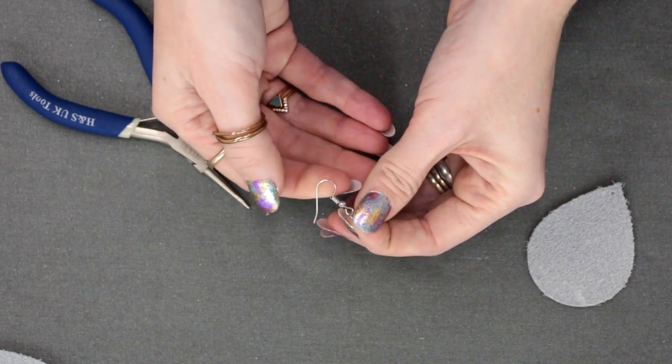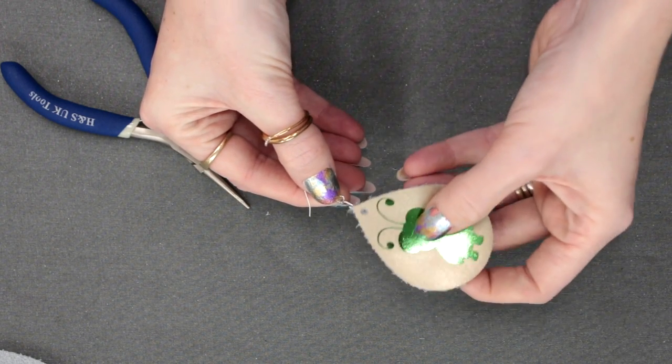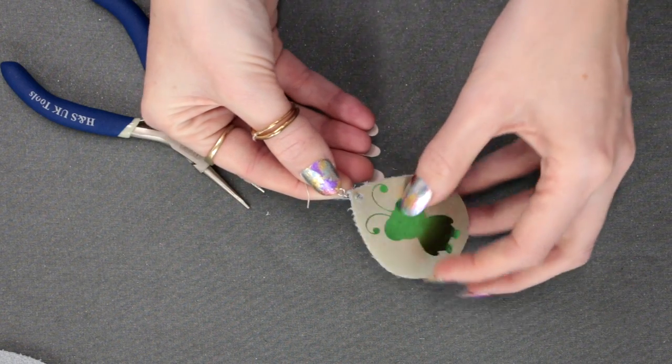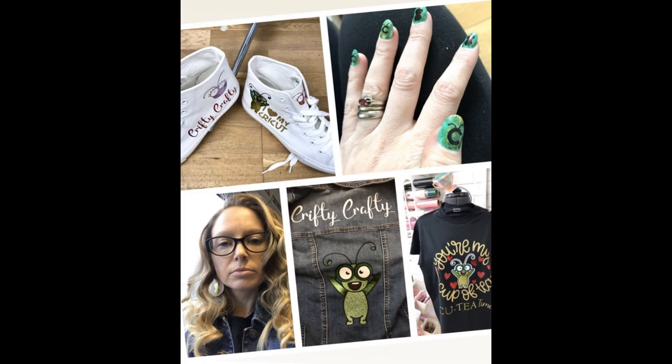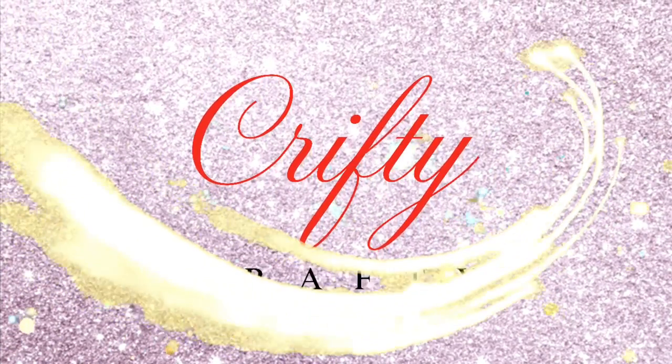Exactly the same with this one—you want to put your open hoop through the earring and then through the metallic leather. You then want to use the tool to close that gap. And there we go, we've got two very beautiful Cricut cutie earrings.